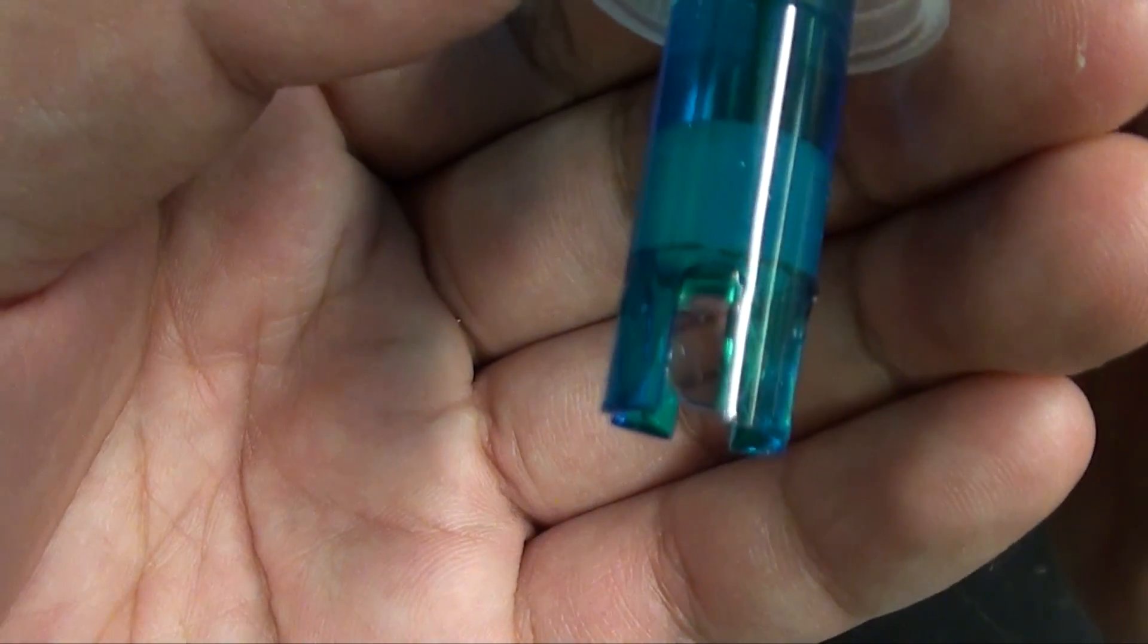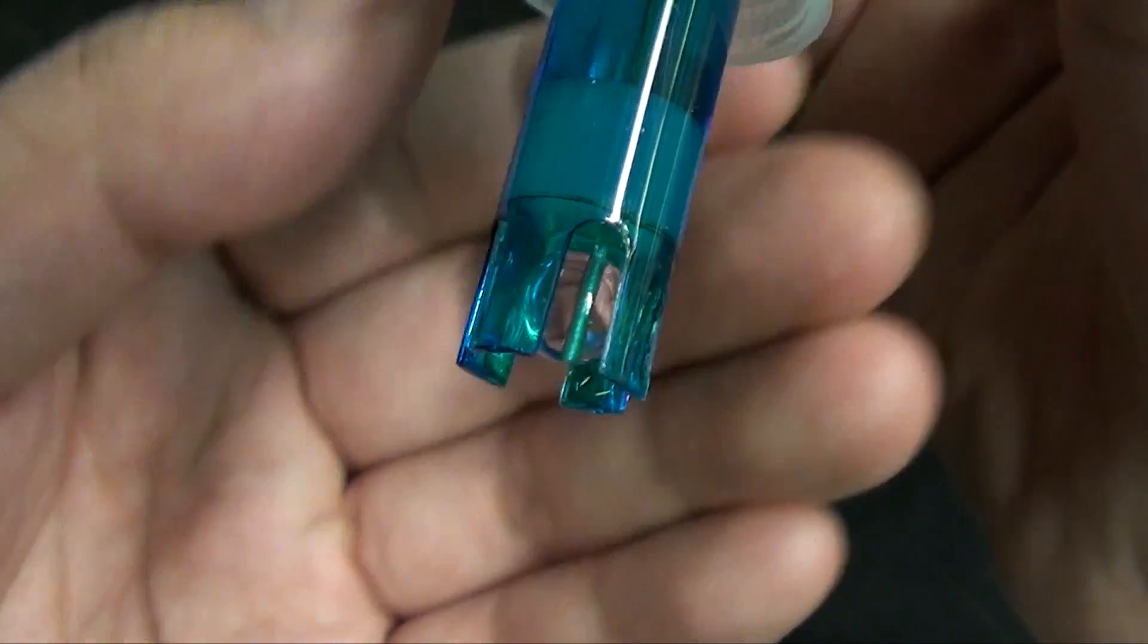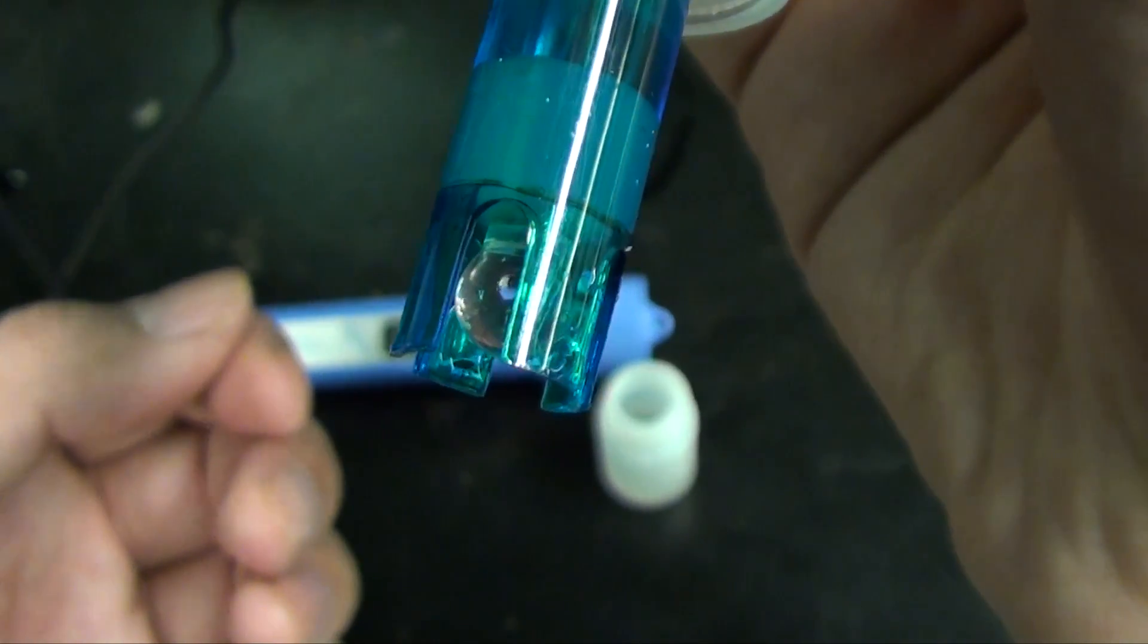And here it is. This glass bulb is what measures pH. If you look inside there is a metal wire. This wire is the inner reference electrode that measures the potential across the glass.